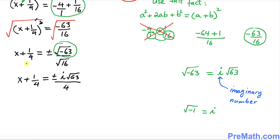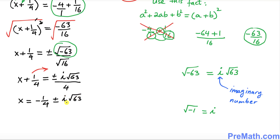Now we want to isolate x, so we must move the positive 1 over 4 to the other side. We get x equals negative 1 over 4, plus or minus i times the square root of 63 divided by 4.